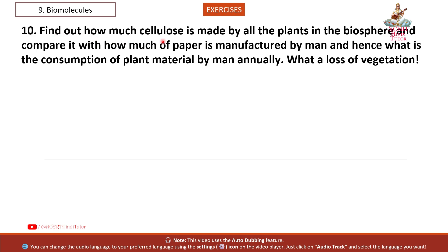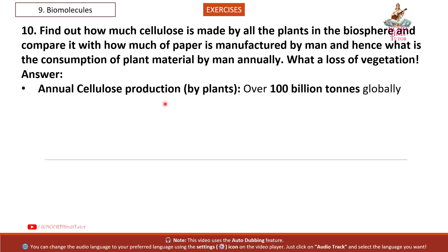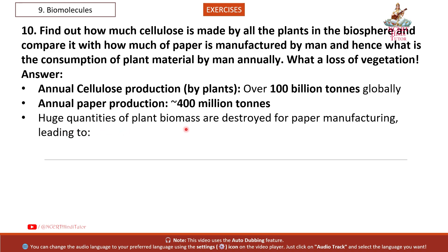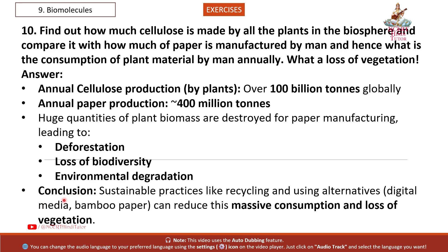Question 10: Find out how much cellulose is made by all the plants in the biosphere and compare it with how much paper is manufactured by humans, and hence what is the consumption of plant material by humans annually. Answer. Annual cellulose production by plants: over 100 billion tons globally. Annual paper production: approximately 400 million tons. Huge quantities of plant biomass are destroyed for paper manufacturing, leading to deforestation, loss of biodiversity, and environmental degradation. Conclusion: sustainable practices like recycling and using alternatives such as digital media and bamboo paper can reduce this massive consumption and loss of vegetation.